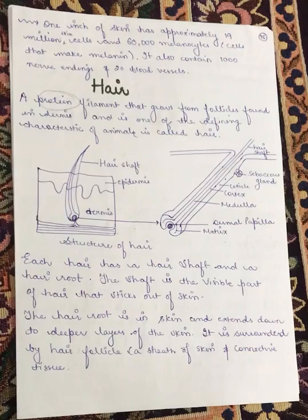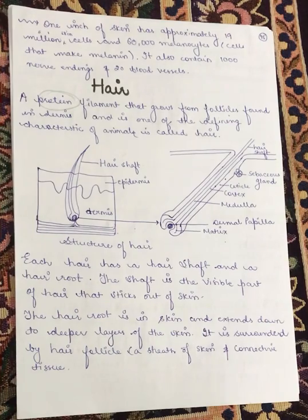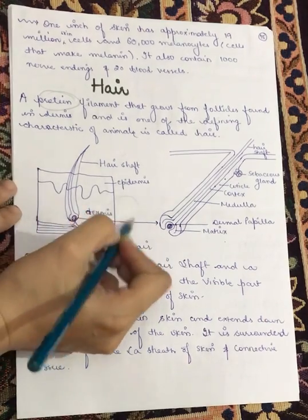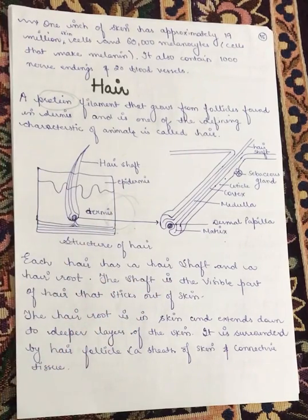We have studied about skin and seen its three layers: epidermis, dermis, and hypodermis. The dermis layer, which is the middle layer of the skin, is where hair begins to grow.